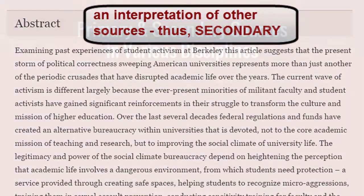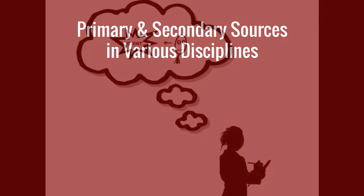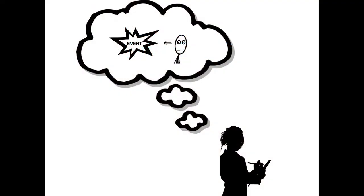Different academic disciplines may use different terminology to talk about primary versus secondary sources, but all are concerned with the distinction between sources close to the object of study and sources further from that object.